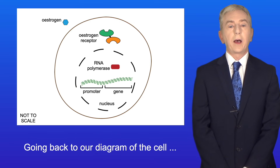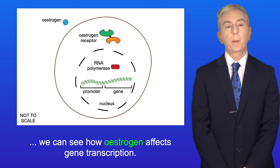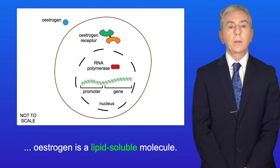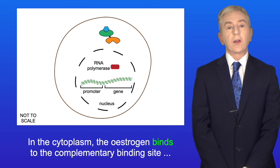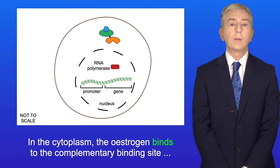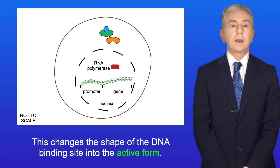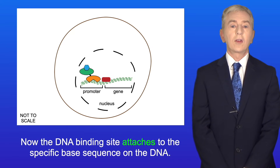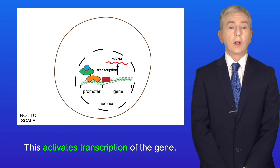Going back to our diagram of the cell we can see how oestrogen affects gene transcription. Like all steroid hormones oestrogen is a lipid soluble molecule, so oestrogen can diffuse through the phospholipid part of the cell membrane. In the cytoplasm the oestrogen binds to the complementary binding site on the oestrogen receptor, changing the shape of the DNA binding site into the active form. The DNA binding site then attaches to the specific base sequence on the DNA and this activates transcription of the gene.